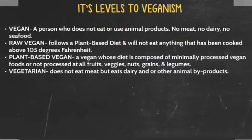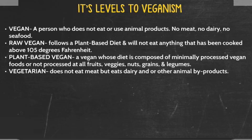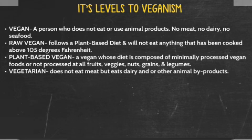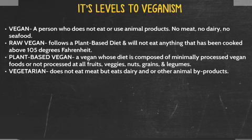Did you know that there are different types of vegans? A vegan is a person who does not eat or use animal products, which means they do not consume meat, dairy, or seafood. A raw vegan is a person who follows a plant-based diet and will not eat anything that has been cooked above 105 degrees Fahrenheit. A plant-based vegan is a vegan whose diet is composed of minimally processed or not processed at all vegan foods — fruits, veggies, nuts, grains, and legumes. A vegetarian does not eat meat, but does eat dairy and or other animal byproducts.